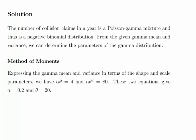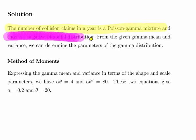To cut a long story short, this is a gamma Poisson mixture and therefore it is a negative binomial distribution. For the given gamma mean and variance, we can determine the parameters of the gamma distribution.